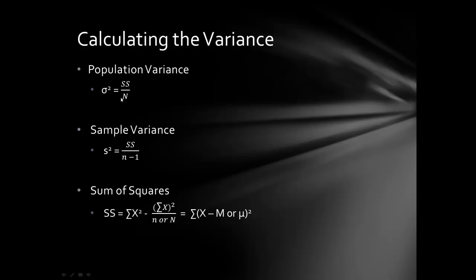If we square the standard deviation formula on both sides, we simply eliminate the square root, giving us the variance. The sum of squares formula stays exactly the same. The only difference between variance and standard deviation is in the final calculation — for variance, there is no square root.